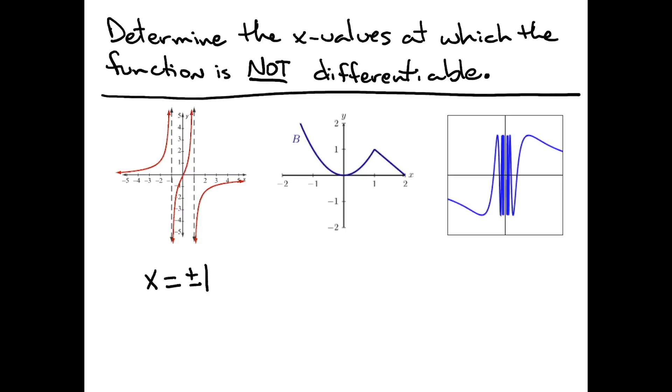In the second function, you can see a cusp located right there, and when there is a cusp, we cannot draw a tangent line. Therefore, we don't have a derivative at that point. So the x values at which the function is not differentiable would be x equals one.